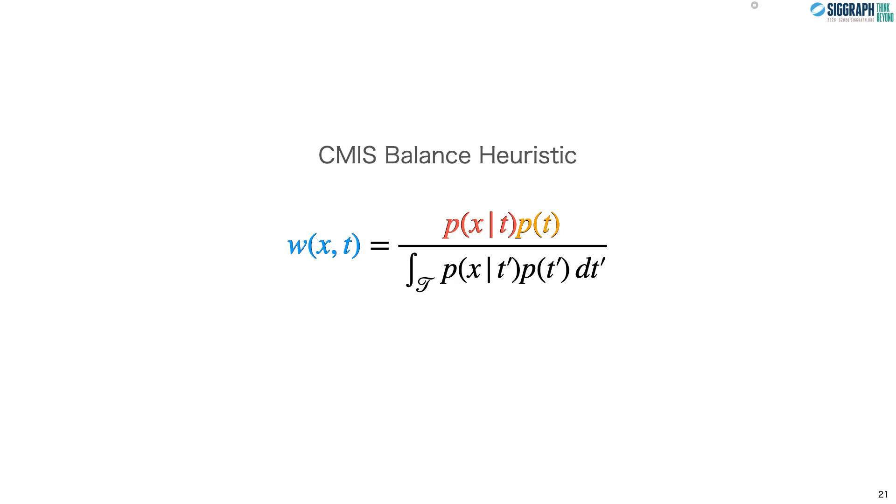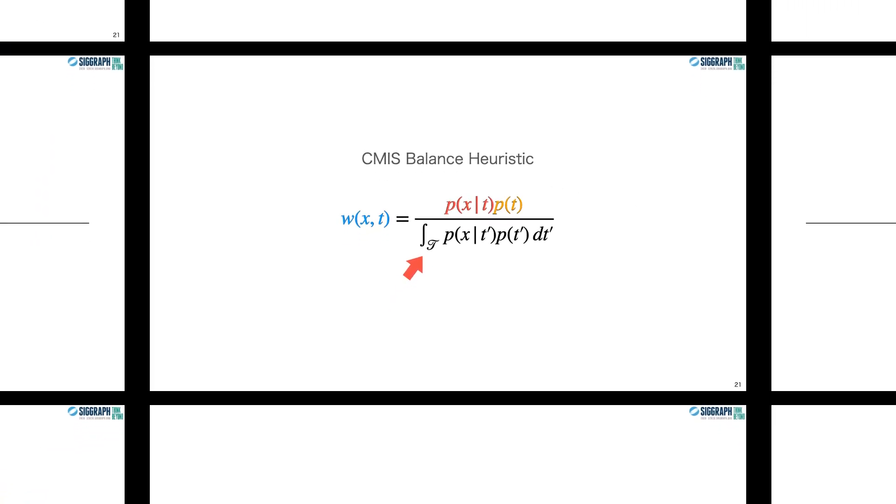So we'd like to use this balance heuristic in practice, but we need to evaluate this density integral in the denominator. Unfortunately, in many applications, as we will discuss shortly, this integral is not available in closed form. This common issue of evaluating integrals in the denominator may seem like a showstopper, but fortunately, we found a way to stochastically approximate it and still achieve unbiased estimation. And we do so using a new type of MIS that we call stochastic MIS.